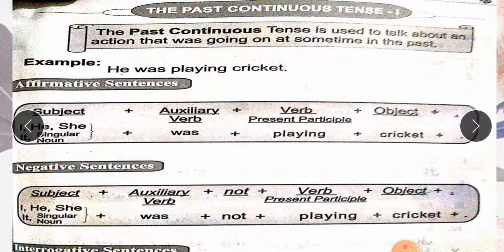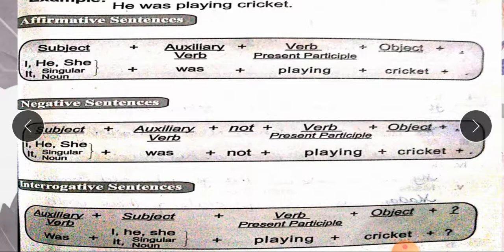Negative sentence structure: We will write 'not' after the auxiliary 'was'. Structure: Subject + auxiliary 'was' + not + present participle + object + full stop. Interrogative: Auxiliary 'was' will come in the beginning of the sentence, and at the end we will put a question mark.